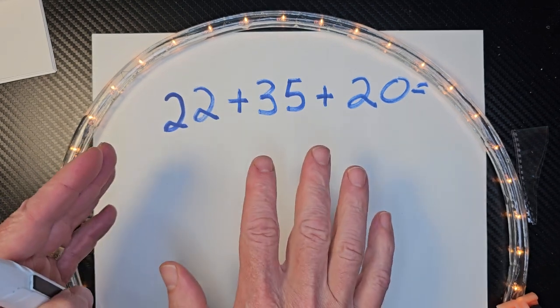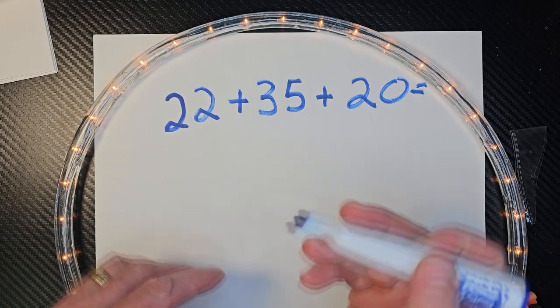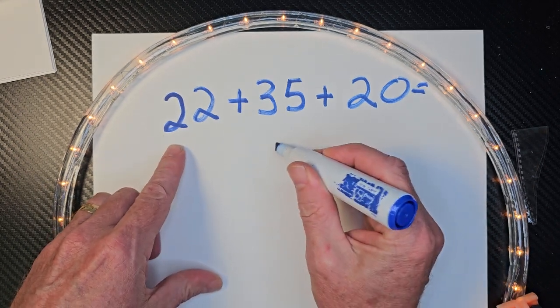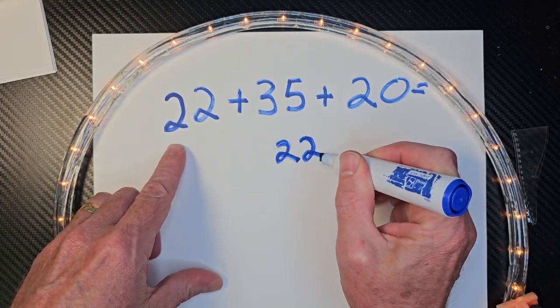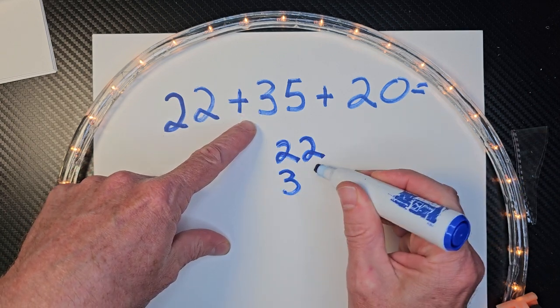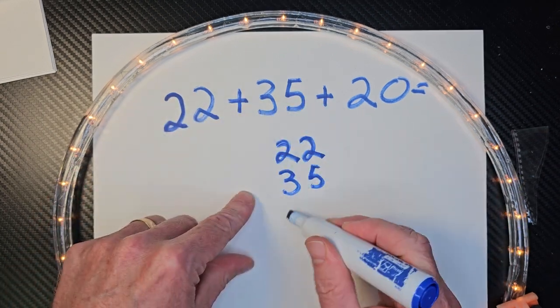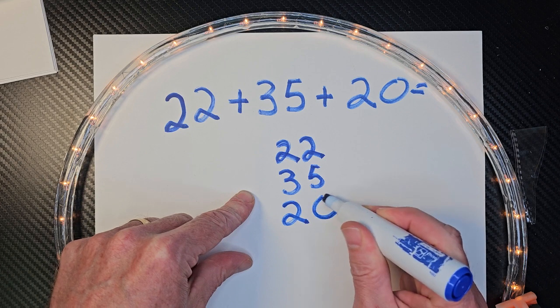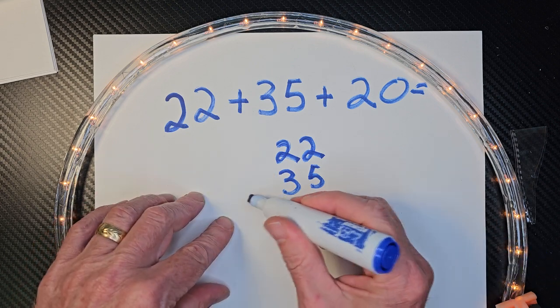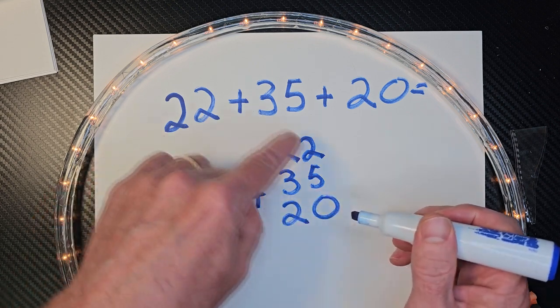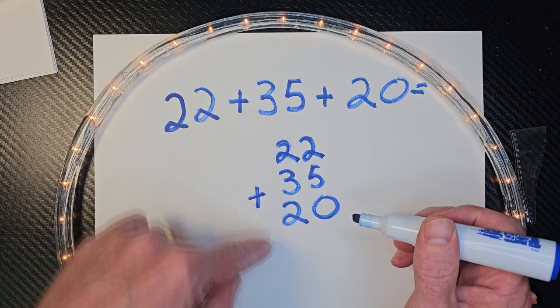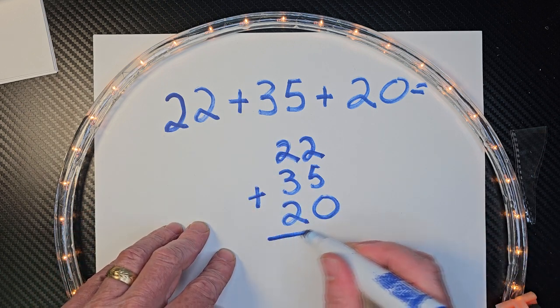When I add numbers like this, I like to rewrite it. So I'm going to go ahead and rewrite 22 plus 35 plus 20. And you'll see that I am lining them up. I have all the ones together and all the tens together. And I put a line down here.